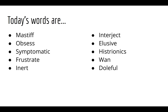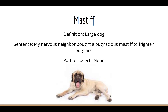The first word is Mastiff. Mastiff is a large dog. A sentence for Mastiff is: my nervous neighbor bought a pugnacious Mastiff to frighten burglars. Part of speech is a noun. Do you remember pugnacious? Yeah — ready to fight. Correct.